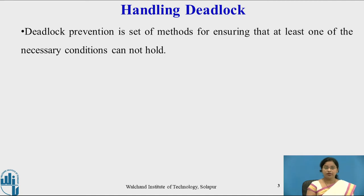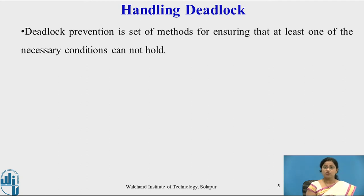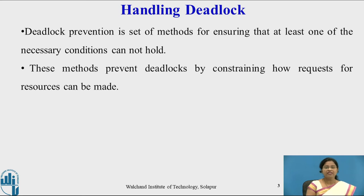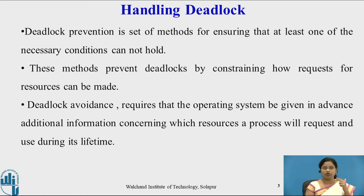What is deadlock prevention? Deadlock prevention is a set of methods for ensuring that at least one of the necessary conditions cannot hold in the system. Those necessary conditions are mutual exclusion, hold and wait, no preemption, and circular wait. Deadlock prevention means one of these conditions should not occur in the system. Design such a mechanism that one of the conditions will never be satisfied. This method prevents deadlock by constraining how requests for resources can be made.